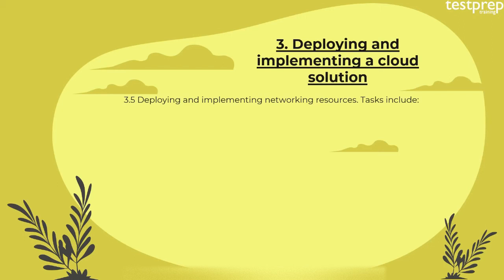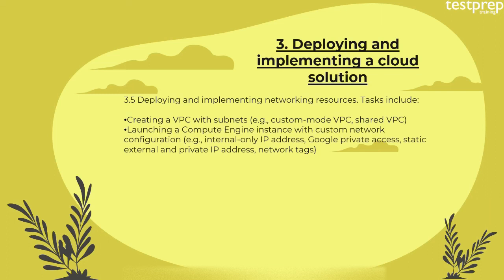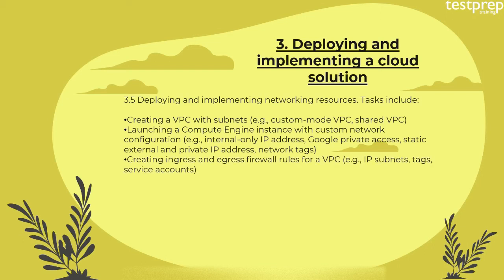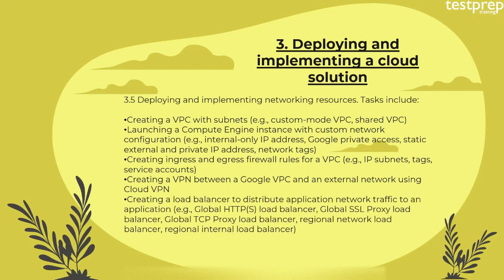Number five: deploying and implementing networking resources — tasks include creating a VPC with subnets (for example custom mode VPC, shared VPC); launching a Compute Engine instance with custom network configuration such as internal-only IP address, Google Private Access, static external and private IP address, and network tags; and creating ingress and egress firewall rules for a VPC using IP subnets, tags, and service accounts.